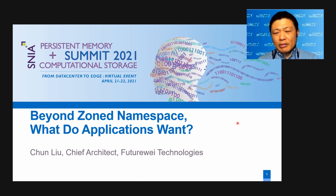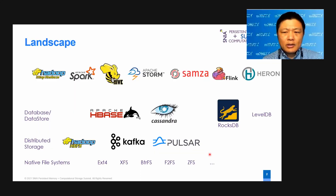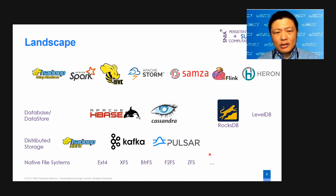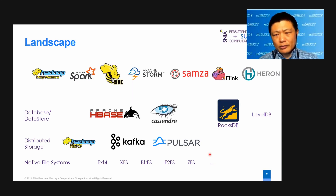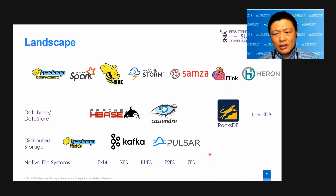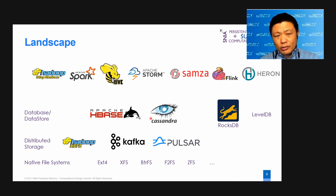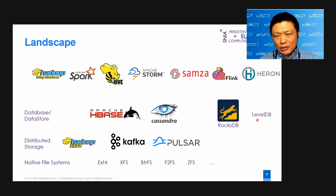We can start with the application side. Here I present the most widely used big data frameworks: the popular Hadoop, Spark, Hive, and Storm, and also the promising ones like Flink and Haray. If we go down the software stack, we can see supporting databases or data stores like HBase, Cassandra, or single-node ones like RocksDB and LevelDB.